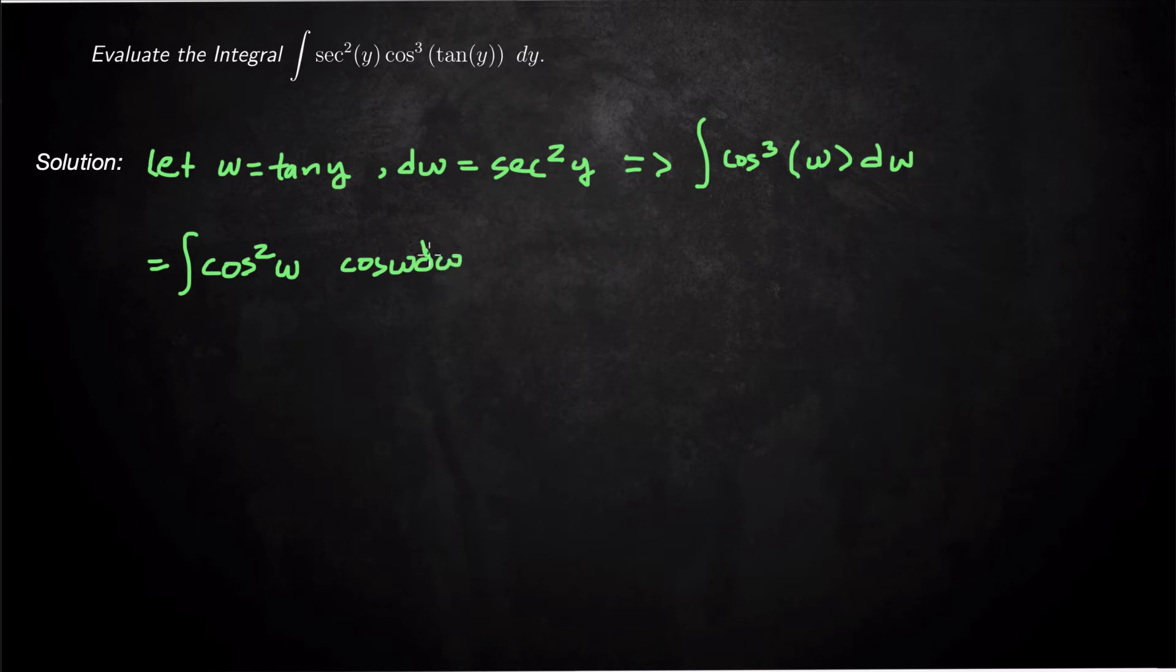So basically setting ourselves up for a substitution for sine. So at this point, what we want to do is use our trig identity, cosine squared is 1 minus sine squared. So that's 1 minus sine squared w times cosine w dw.